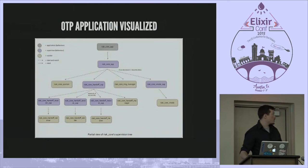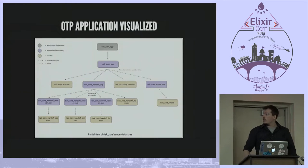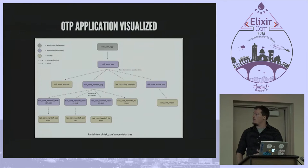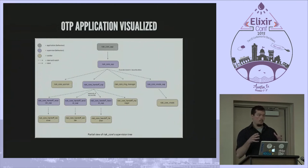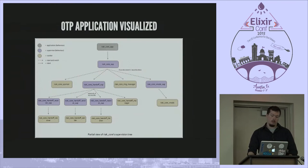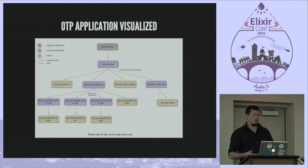This is a quick visualization — I borrowed this off of Google — it's an overview of the React core application, just a subset. You're familiar with this top-level app being responsible for bootstrapping the supervision tree. You have your application behavior, your core supervisor, and then supervisors — color-coded purple — and yellow workers. Supervisors start their children and workers, and so on down the tree.